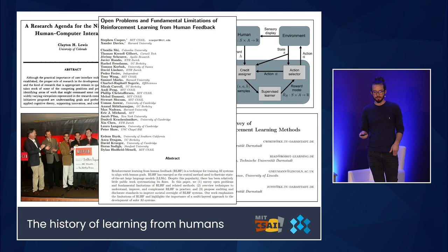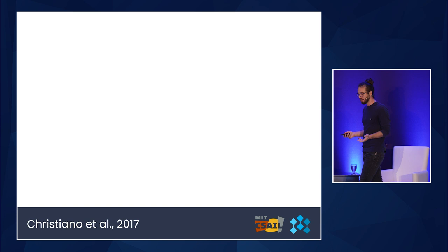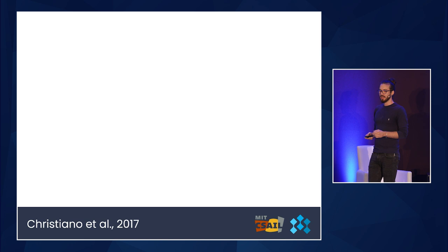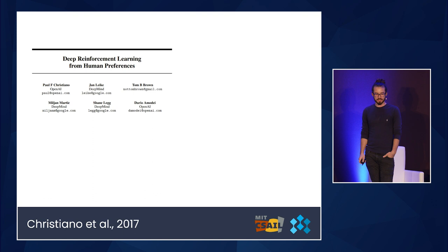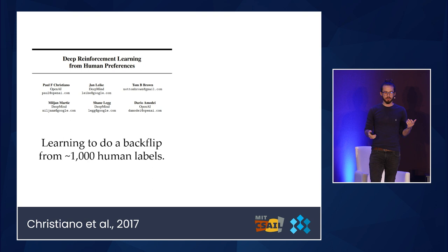Despite the long history of RLHF, there was one pretty notable event that happened in 2017: the Christiano et al. paper. It's called 'Deep Reinforcement Learning from Human Preferences.' The main thing done here was learning to do a backflip from about 1,000 human labels. The system learning this backflip was a simple agent in a simulated physics environment doing a robotics control type task.